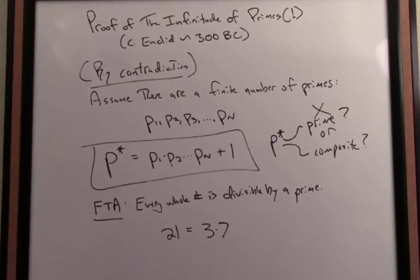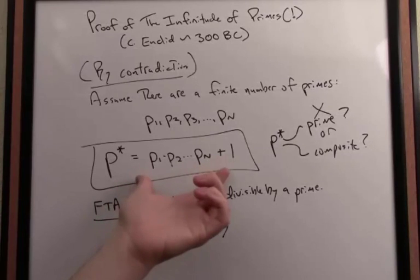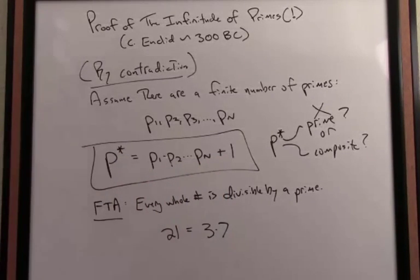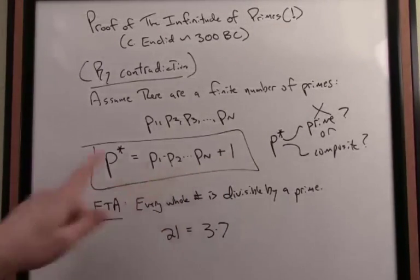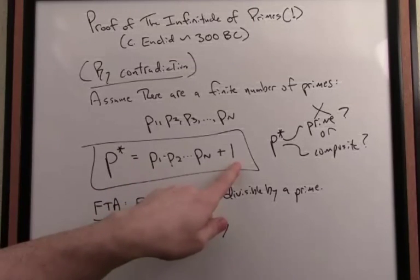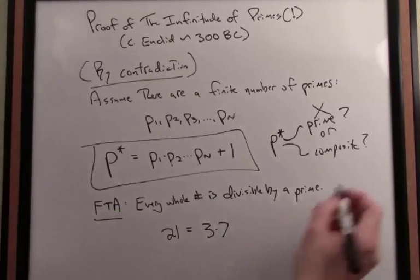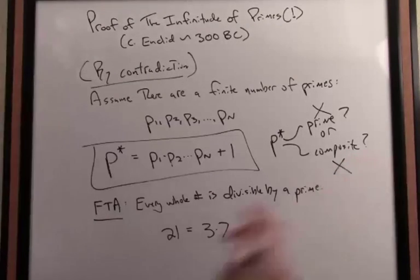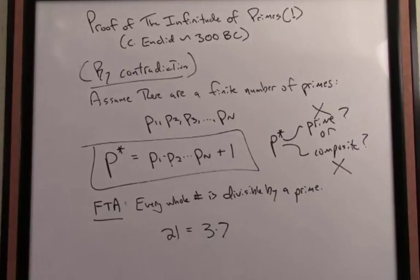But we have a problem here, because P*, in fact, is not divisible by its construction by any prime. Because when I divide by a prime here, any known prime, I get remainder 1. So P* is therefore also not composite.